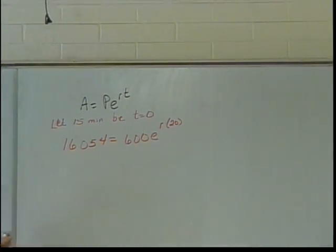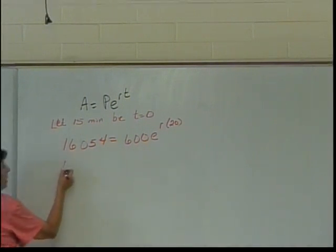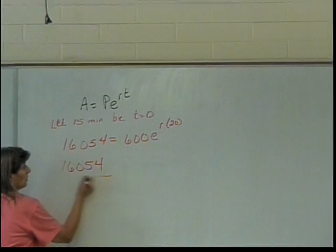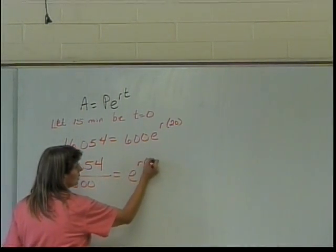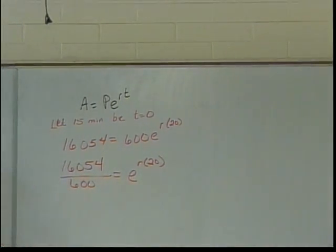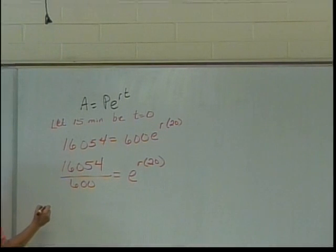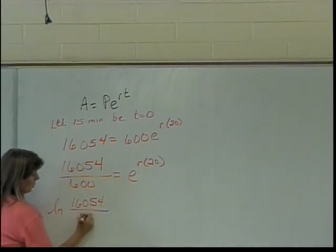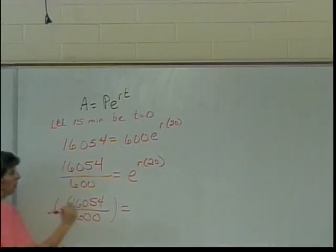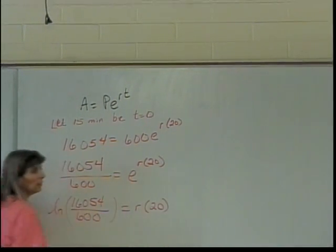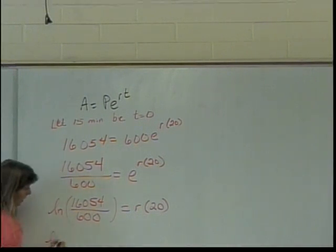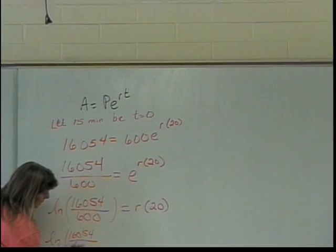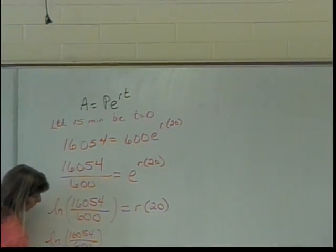What do I do to solve it? Divide by 600. So I have 16,054 divided by 600 equals e to the r times 20. Then change forms — take the natural log: ln(16,054 / 600) equals r times 20. And then finally, divide by 20: ln(16,054 / 600) divided by 20 equals r.